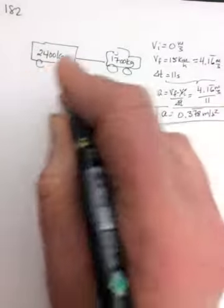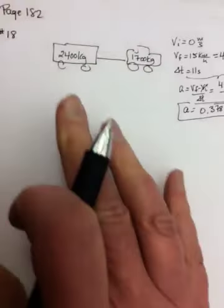So A is going to equal 0.378 and the 7.8 repeats meters per second squared. Okay, so this is our acceleration of the whole system, of the two individual objects, everything.